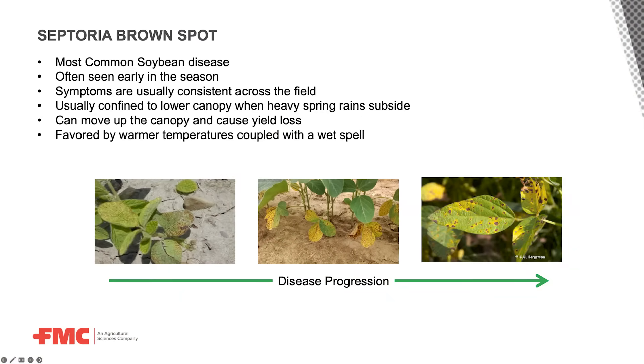Septoria brown spot is there every year — we see this in almost every field. It's that small brown speckling on the lower canopy. In some years it can move up into the upper canopy, and in those years it can lead to significant yield loss. It seems to be ubiquitous, always out there, and hard to evaluate how much of an impact it's having. But it causes those lower leaves to turn yellow, senesce early, and drop those trifoliates, which then impacts pod fill at those nodes. So it's having an impact, maybe not as significant as some years.